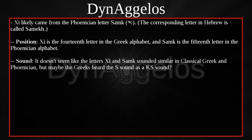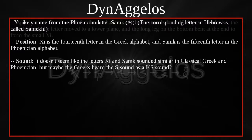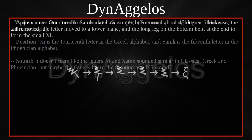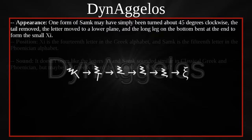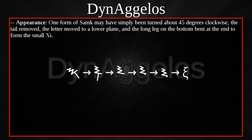It doesn't seem like the letters XI sounded similar in classical Greek and Phoenician, but maybe the Greeks heard the S sound as a KS sound. One form of samkh may have simply been turned about 45 degrees clockwise, the tail removed, the letter moved to a lower plane, and the long leg on the bottom bent at the end to form the small XI.